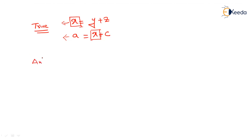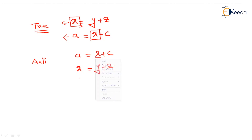Anti-dependence is the reverse: A = X + C is the first instruction, and X = Y + Z is the second. In the first instruction X is a source operand, and in the second instruction X is the destination. The register used as a source in the first instruction will be updated by the second instruction — this is called anti-dependence.